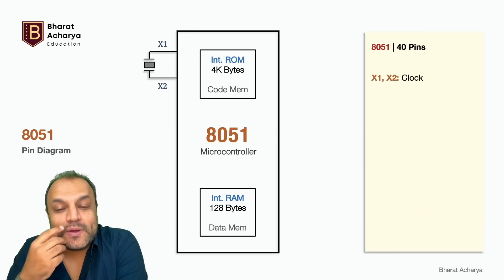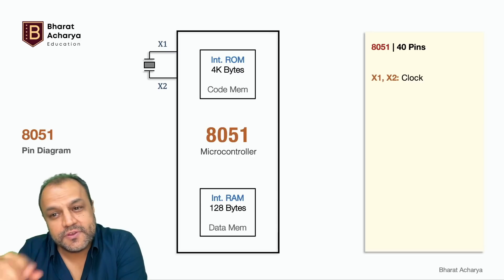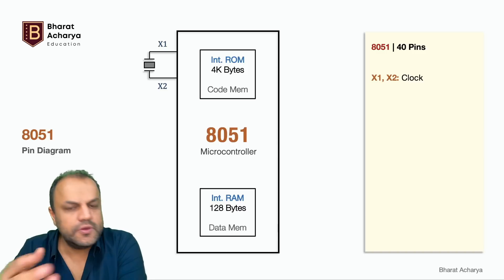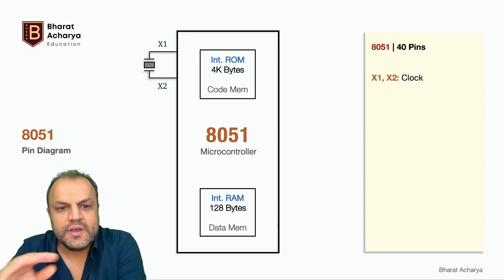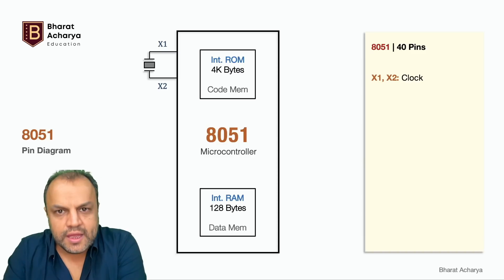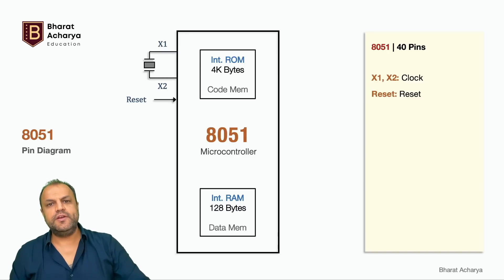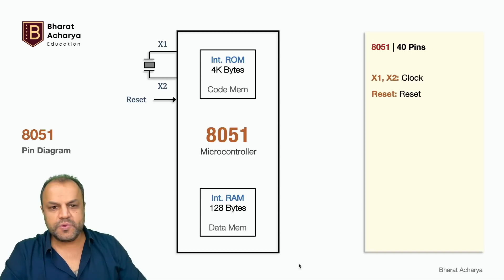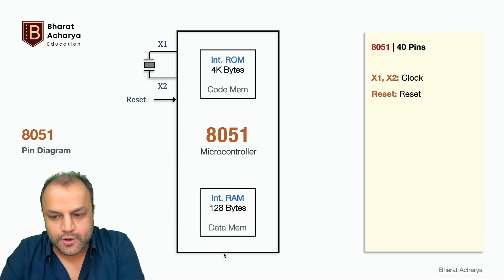These are the 40 pins of 8051. The first ones — X1 and X2 — are connected to the crystal oscillator. They supply the clock; they are called clock inputs. The standard frequency is 12 MHz, though you can always use different frequencies. Reset is used to reset the device — every device has a reset button and so does 8051. When you press reset, the contents of RAM are gone but the contents of ROM are retained.